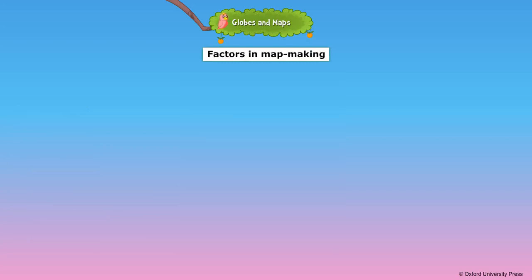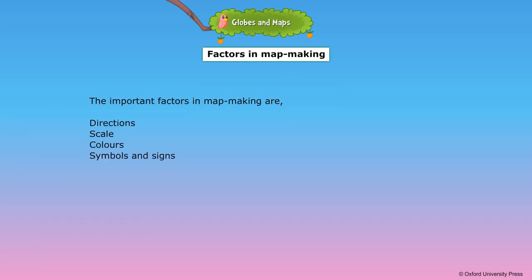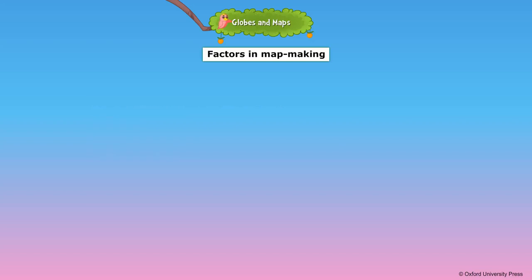The important factors in mapmaking are directions, scale, colours, and symbols and signs.